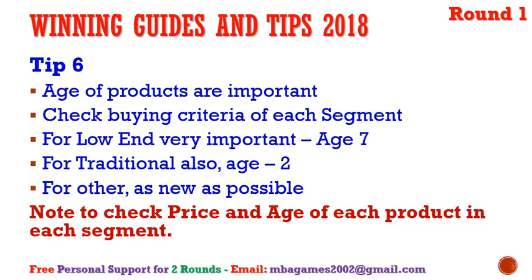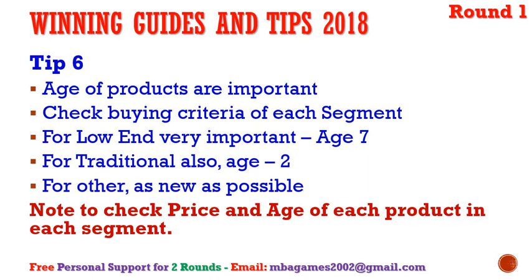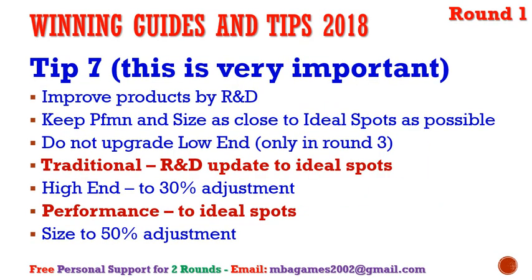Spend a few minutes checking the industry condition report for price and age of each product in each segment. Tip number seven: update R&D every round. If you miss one round you cannot turn the situation around, so it's very important to follow the schedule and update the product every round. If you forget to update for one round — especially round one — later rounds cannot get the product to the ideal spot, with very bad consequences.